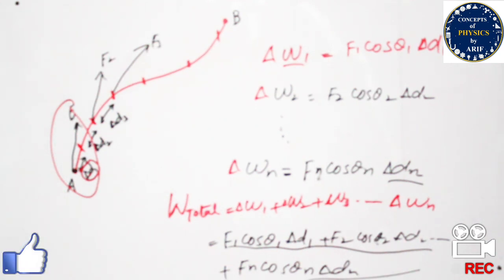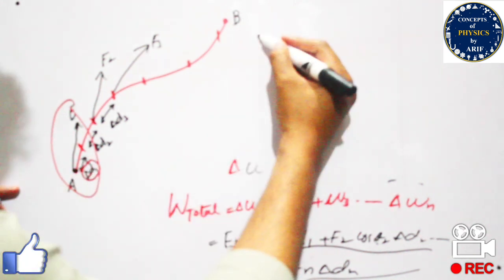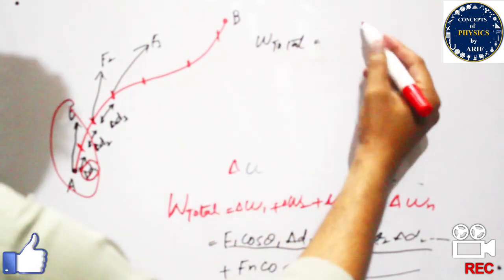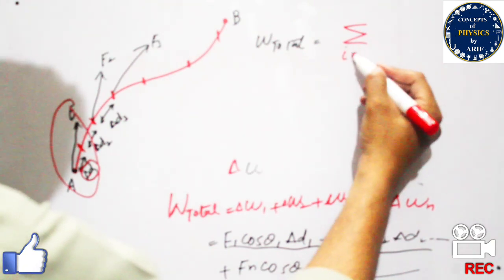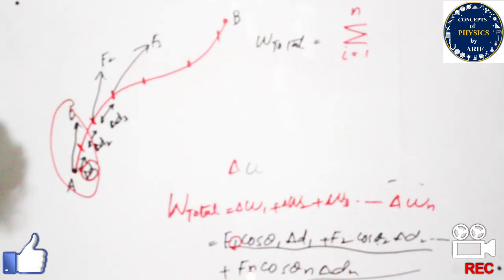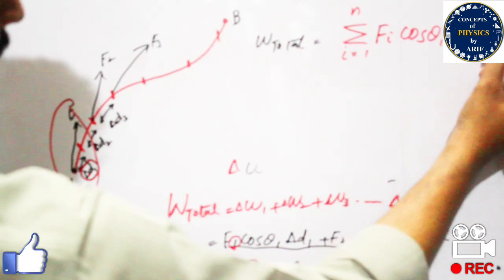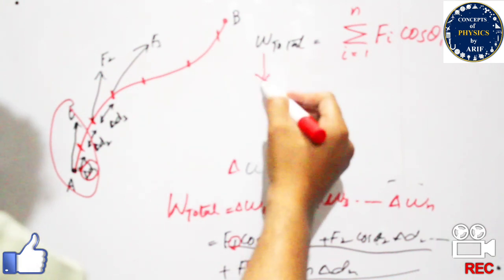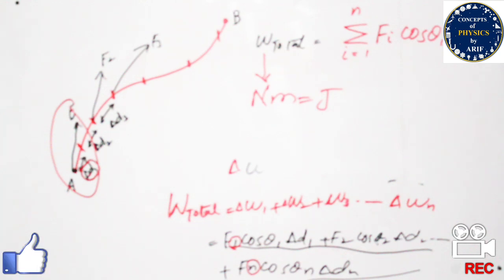We can generalize this into one term. The total work done W_total equals the summation from i = 1 to n of Fᵢ·cosθᵢ·Δdᵢ. This is the generalized term. Please remember that the unit of work done is newton meter or joule.